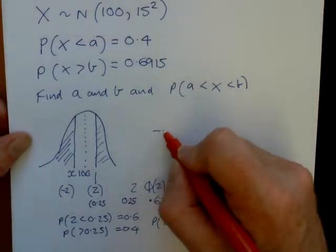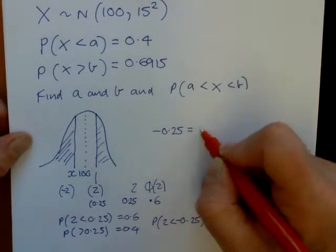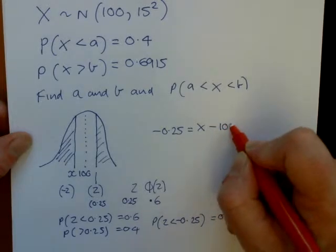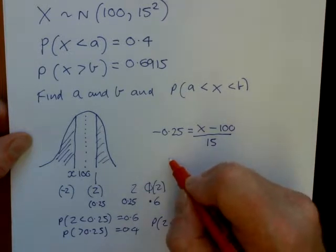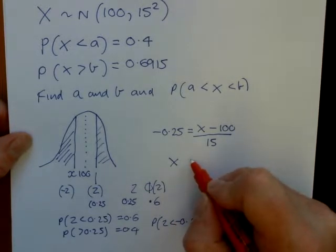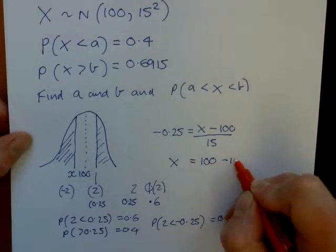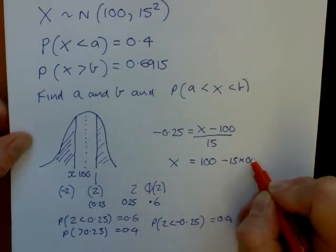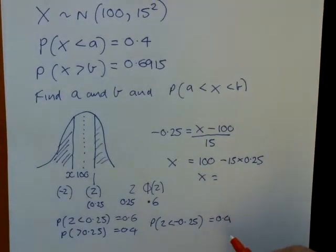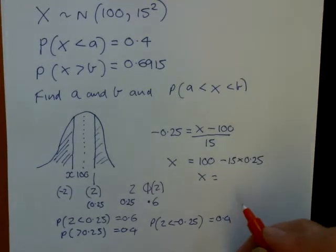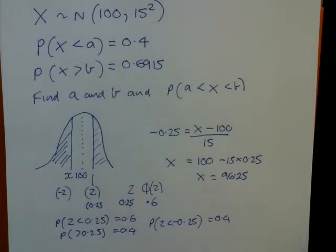Therefore, the probability that z is less than minus 0.25 would be our 0.4, which is what we want. So we now convert our minus 0.25 z-value into the x-value. We have x minus the mean, which is 100, over the standard deviation, which is 15. So x will equal 100 minus 15 times 0.25. Taking your calculator, you'll find that comes to 96.25. So that's our first value of x.